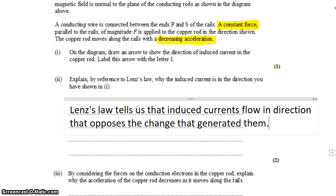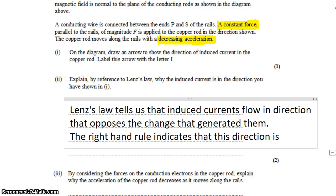So induced currents flow in the direction that opposes the change that caused them to exist in the first place. This is like a negative feedback. Building on that, we can then say that the right-hand rule indicates that this direction is upwards, or is in the direction shown in part 1.